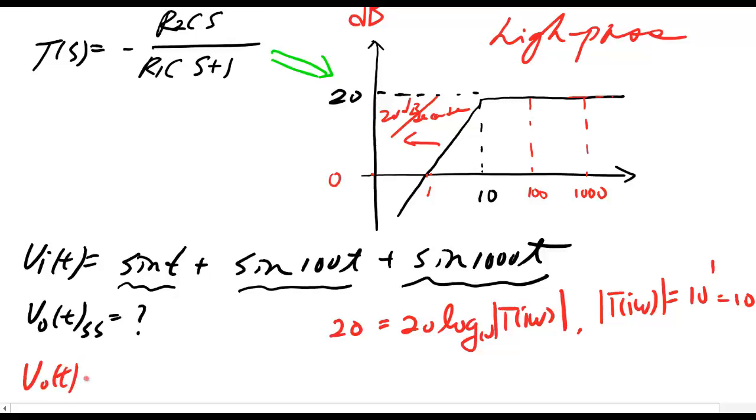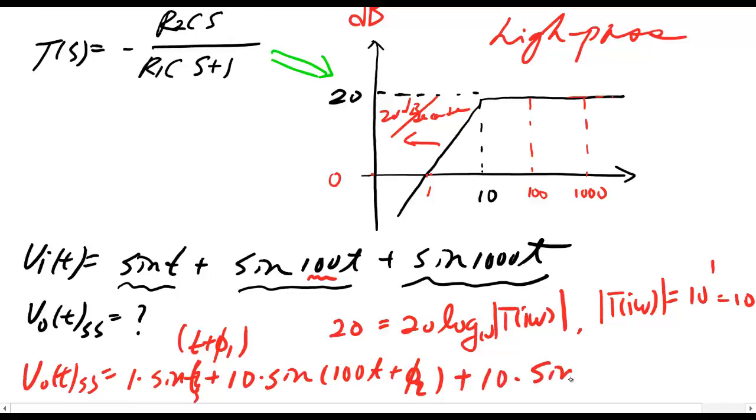My steady state output would be 0 dB that's 1 times sine t. At 100 frequency 100 I have 20 dB which is 10. So 1 times 10, so that's 10 times with a phase. I forgot to put a phase should be phase here. And then for thousand should be 1 times 10 sine 1000 t plus phase.